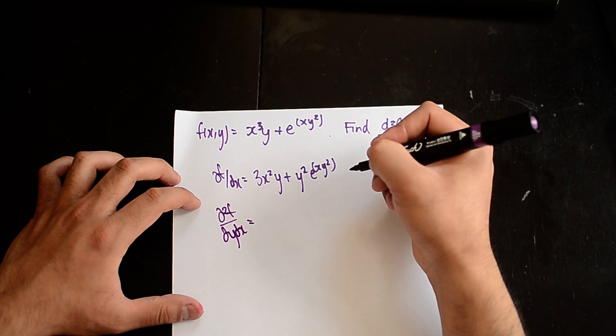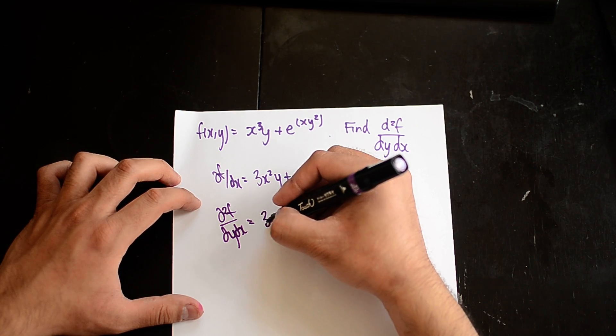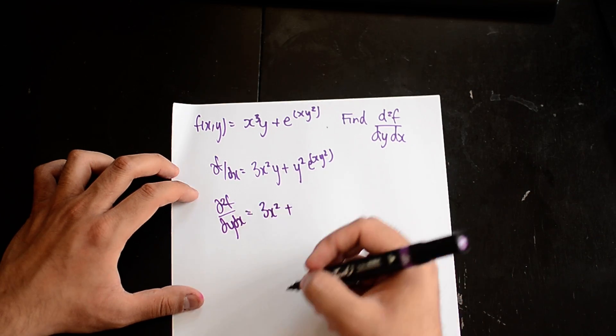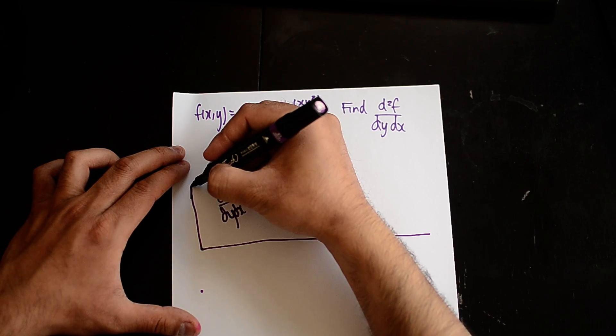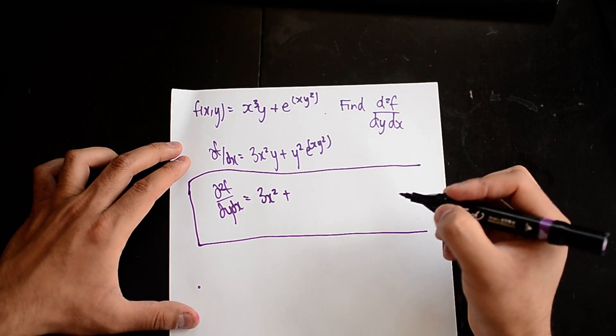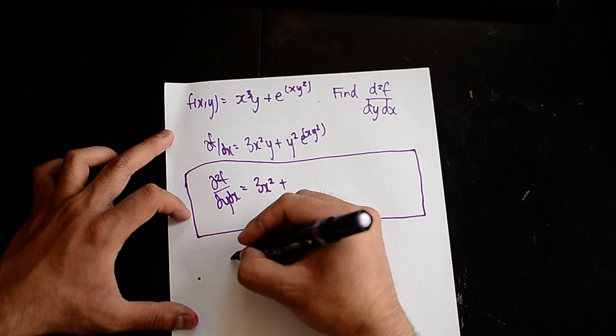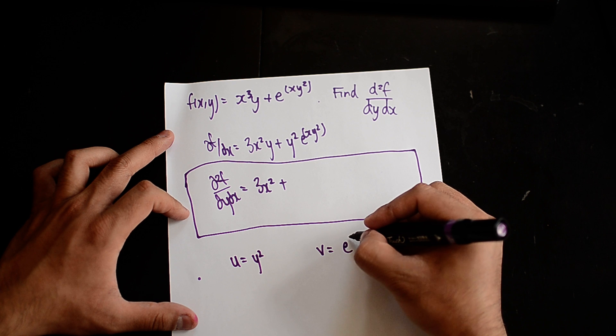dy over dx, so holding the x terms as constant and differentiating y, this will become 3x². And here I'm going to start down here and split this up: make u equal y², make v equal e^(xy²).